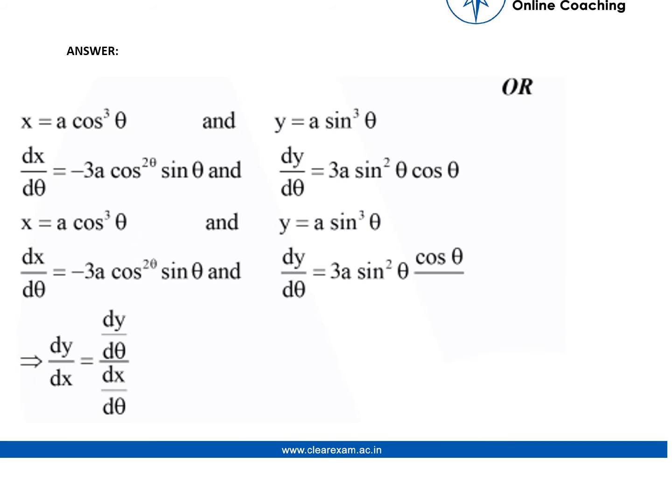Now we will be finding the OR part. We are given x equals a cos cubed theta and y equals a sine cubed theta. We will be differentiating it with respect to theta. So dx by dθ equals minus 3a cos squared theta times sin theta, and dy by dθ equals 3a sine squared theta times cos theta.